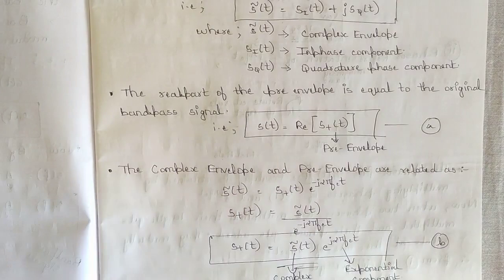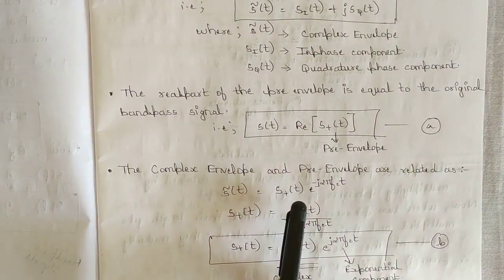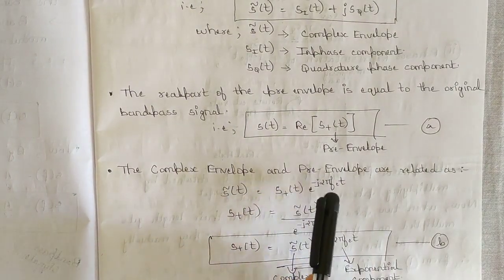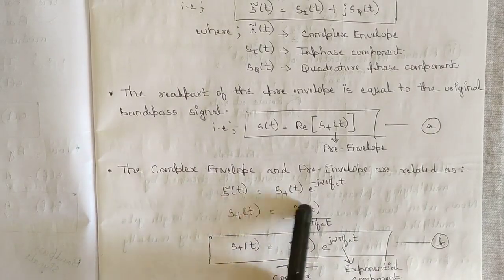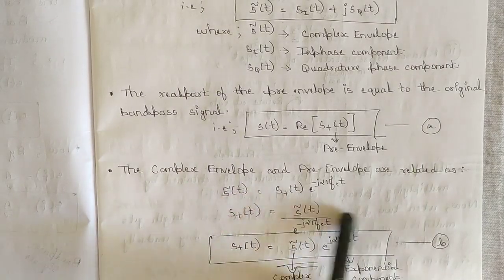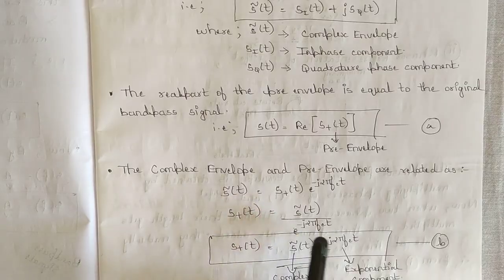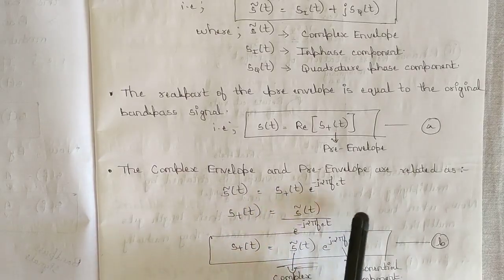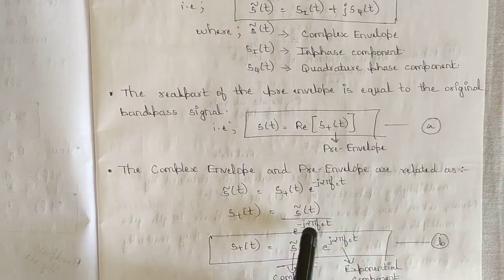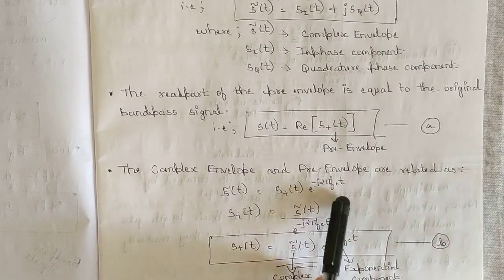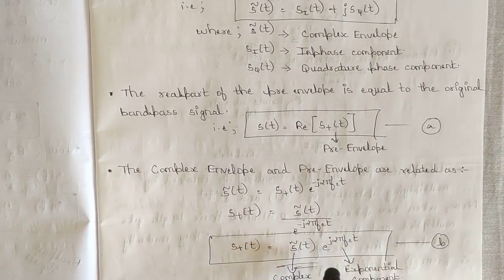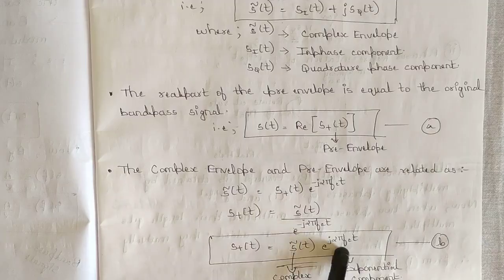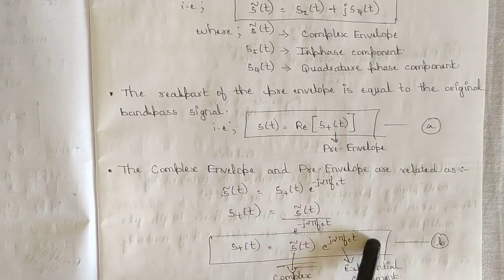Rearranging: bring e^(−j2πf_c·t) to the other side, so s⁺(t) = s̃(t) / e^(−j2πf_c·t). Bringing it to the numerator gives s⁺(t) = s̃(t)·e^(j2πf_c·t) — call this equation B — where s̃(t) is the complex envelope and e^(j2πf_c·t) is the exponential component.